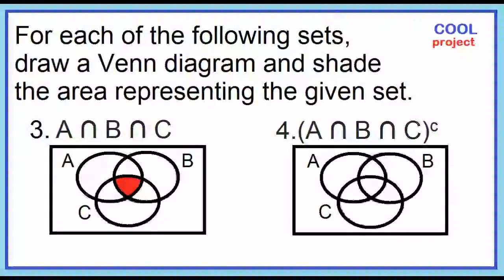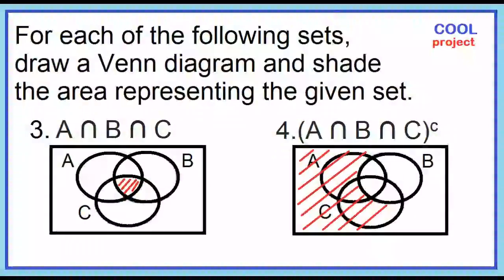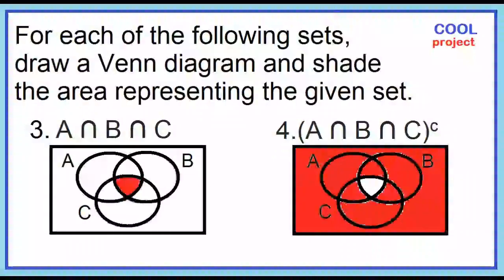Number four: the complement of the quantity A intersection B intersection C. This is the opposite of A intersection B intersection C. Shade the area excluding A intersection B intersection C.